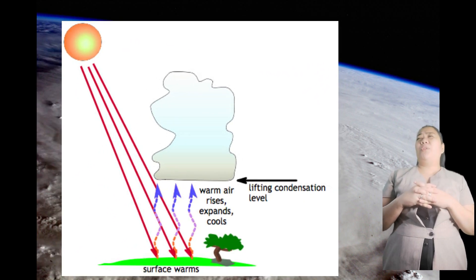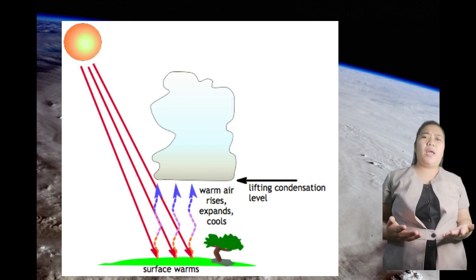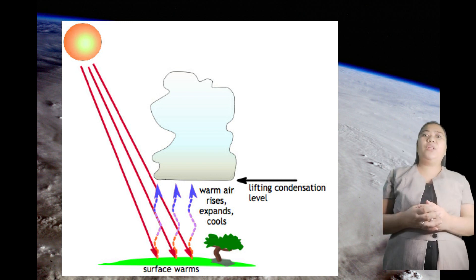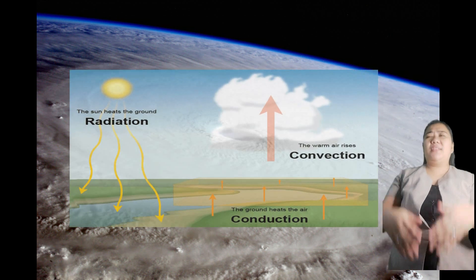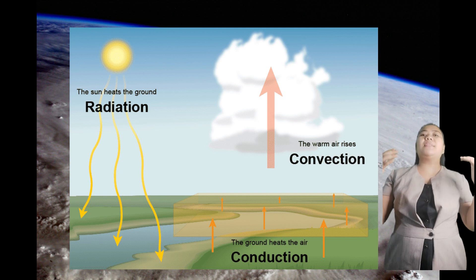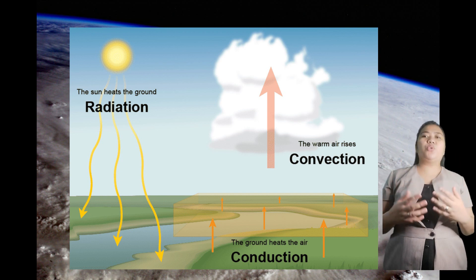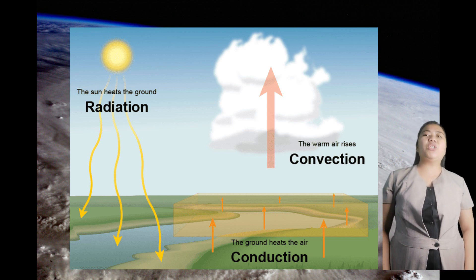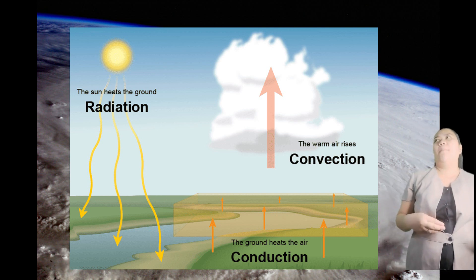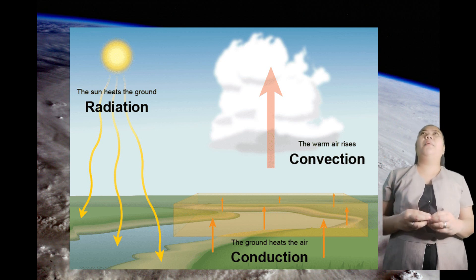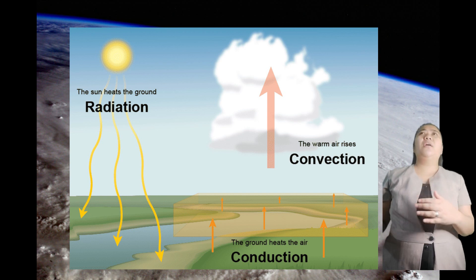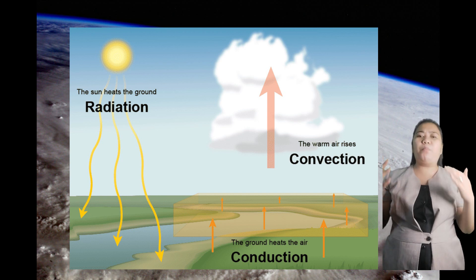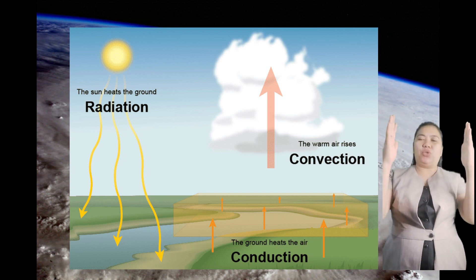When these heated gases rise from the lower troposphere, they carry with them moisture, resulting in a low-pressure system essential for a tropical cyclone to form. Since the moisture evaporated, the rising air carries water vapor from the surrounding area upward. As a result, a low-pressure area forms at that particular location as the gases rise up.